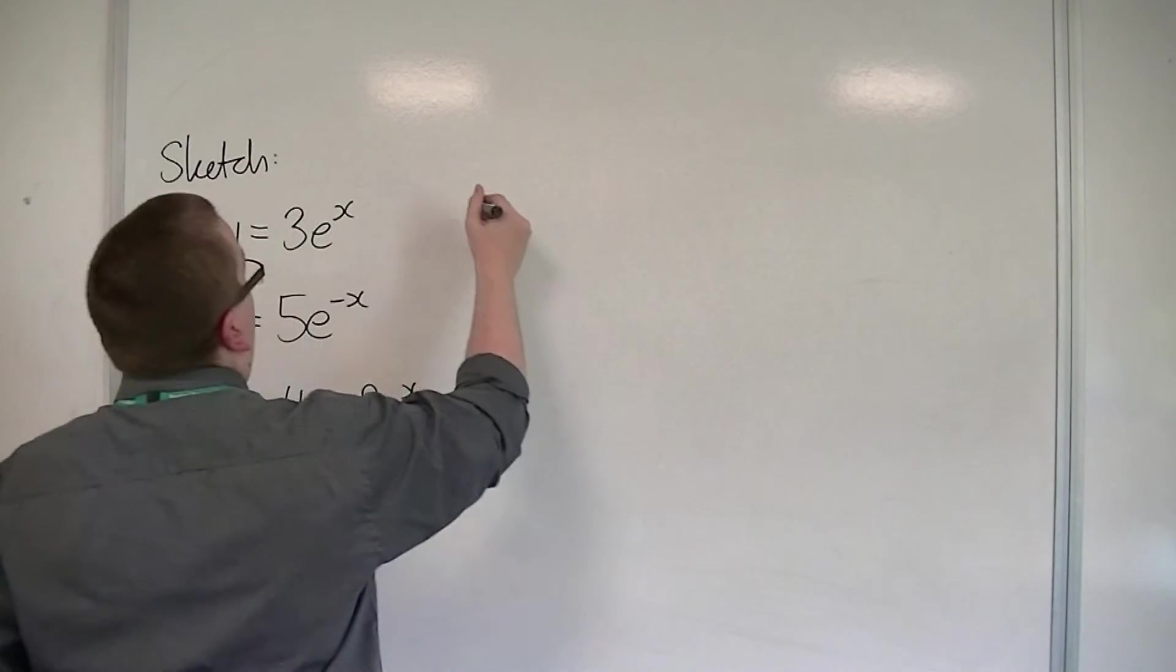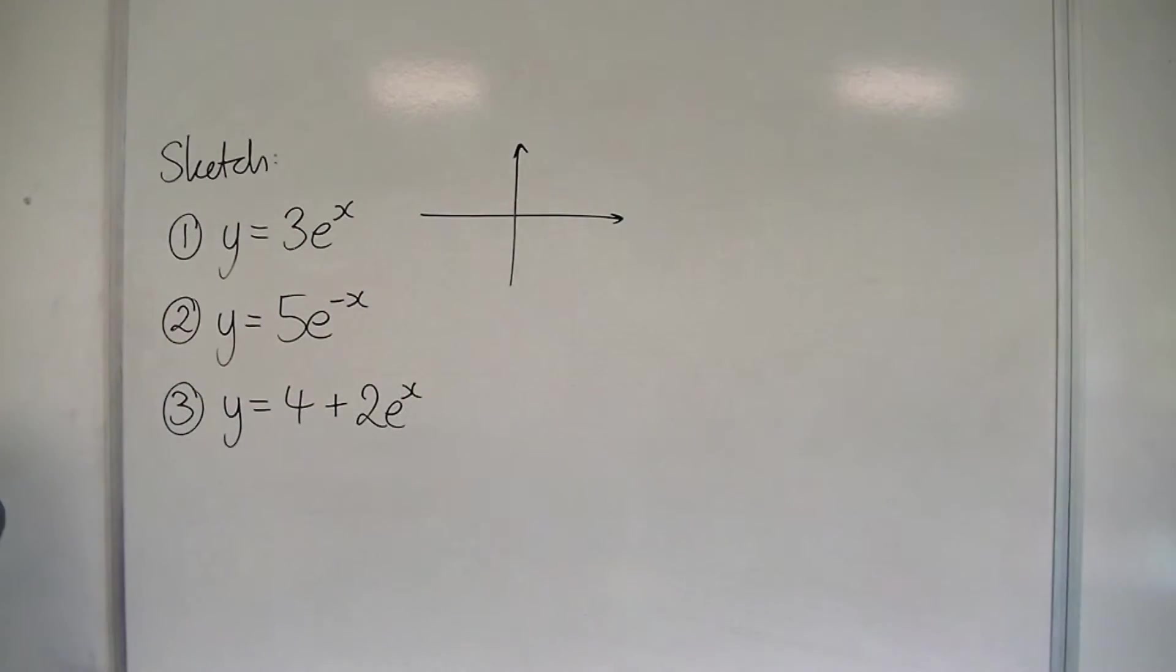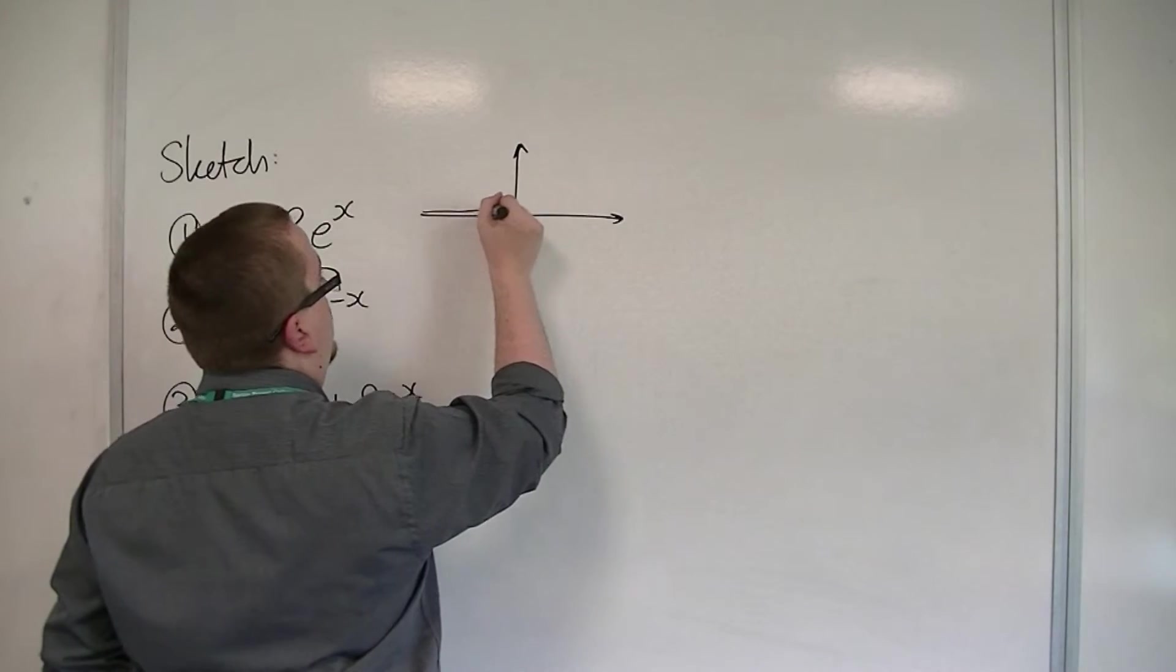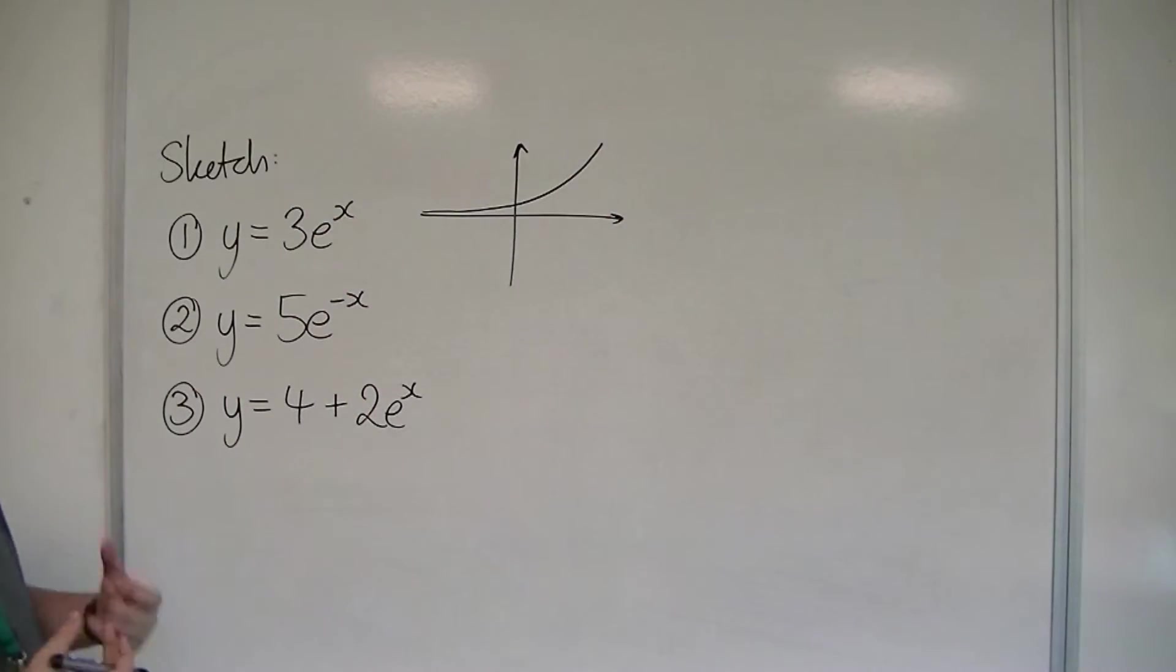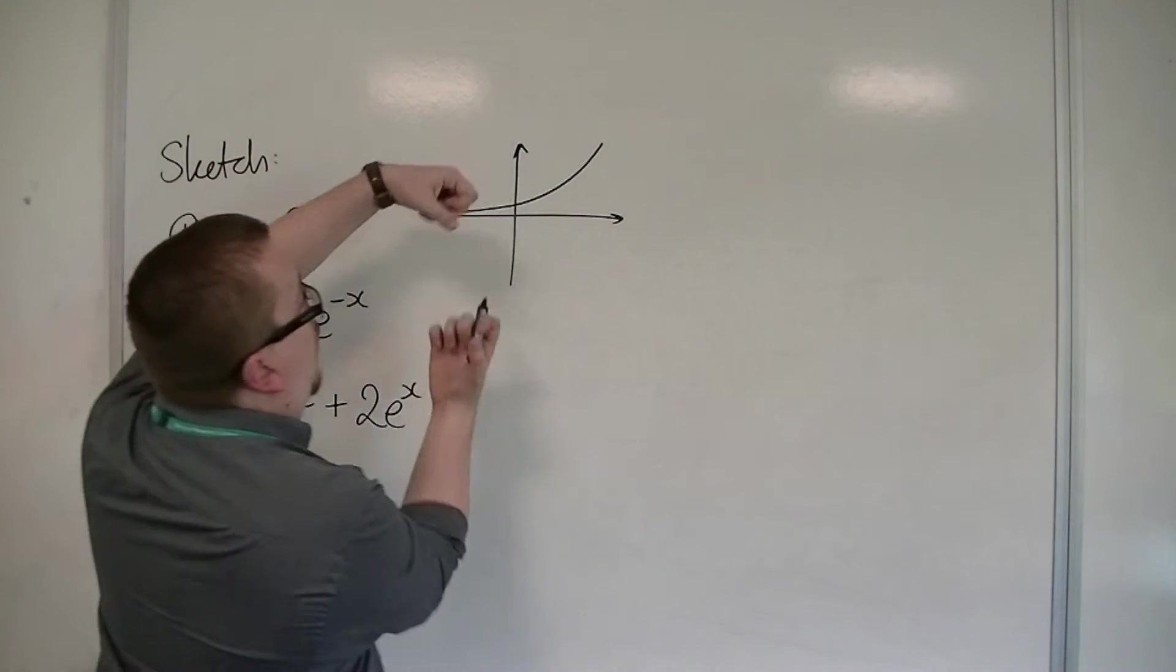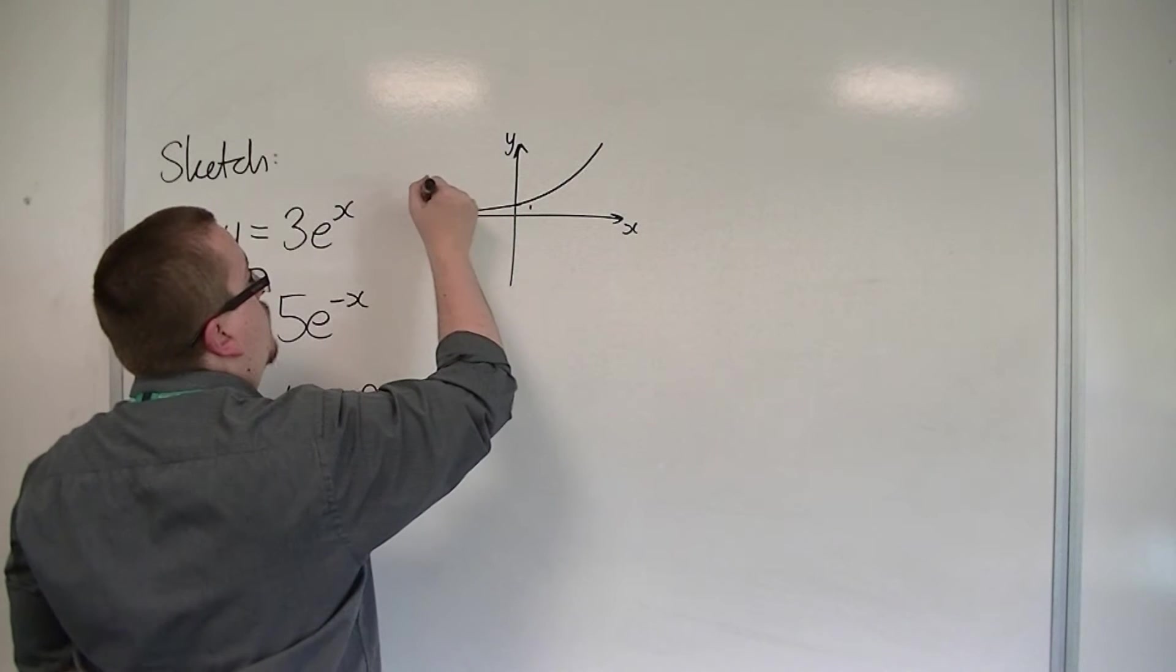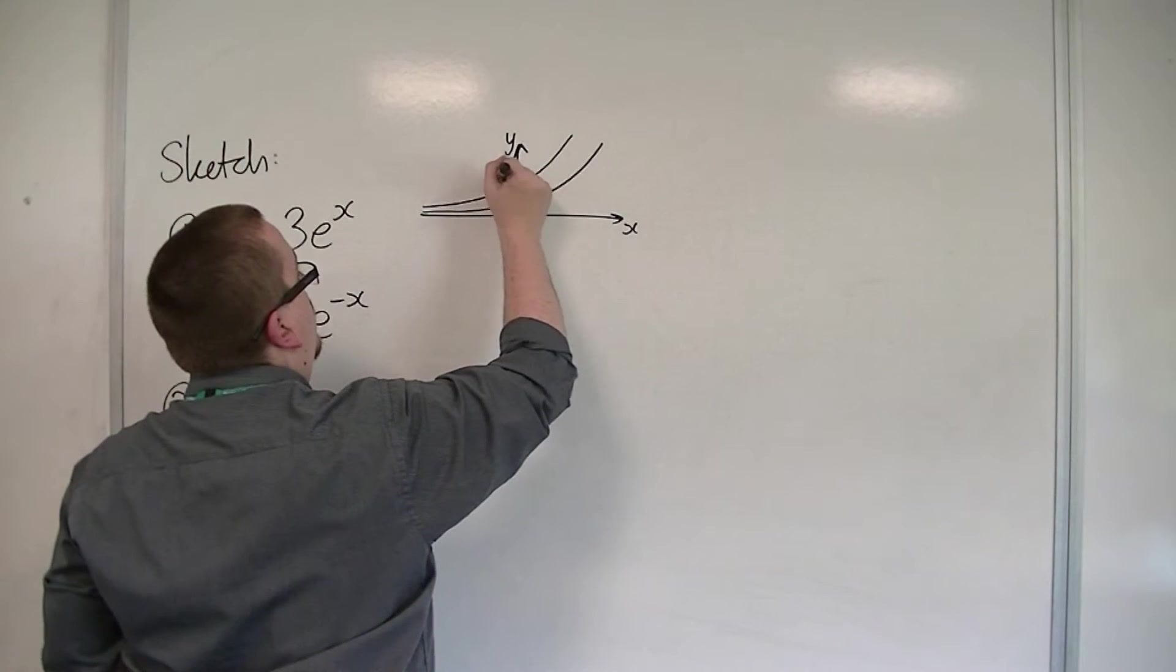If I was going to sketch this, what I would do is first sketch y = e^x. So there's my y = e^x. And then if I stretch this in the y-direction by a factor of 3, instead of going through 1, it'll go through 3.